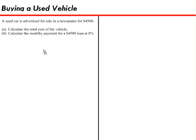So in this clip we'll take a look at a math problem that involves a used vehicle. Let's have a look at our first example problem. A used car is advertised for sale in a newspaper for $4,500. In part A, calculate the total cost of the vehicle. And in part B, calculate the monthly payment for a $4,500 loan at 8% interest compounded monthly for two years.